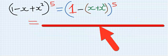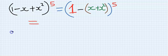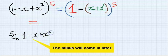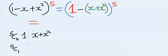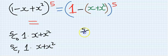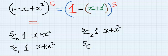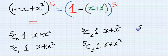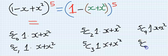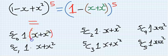To solve this, I will write my answer using the combination method. My first term will be five combination zero, then one, then x plus x squared. The next will be five combination one, then one and x plus x squared. Next is five combination two, one and x plus x squared. Then five combination three, one and x plus x squared. Then five combination five, one and x plus x squared.